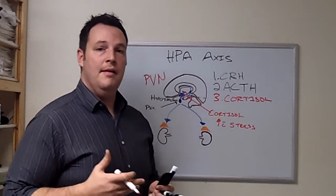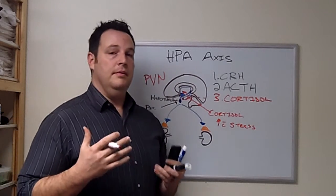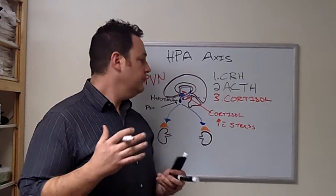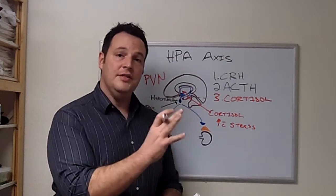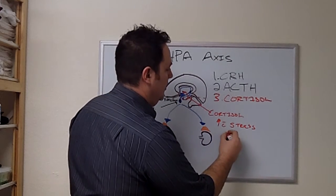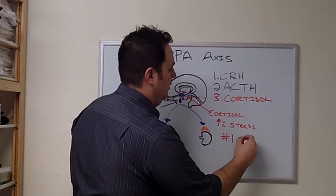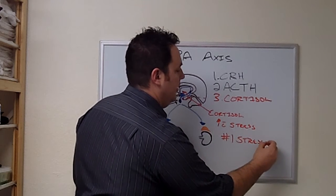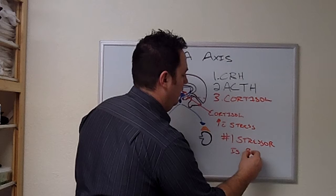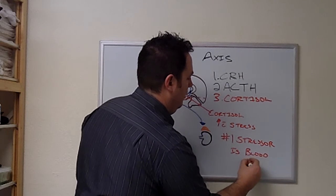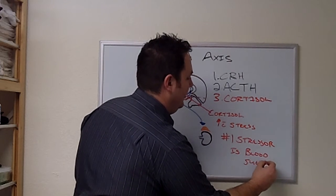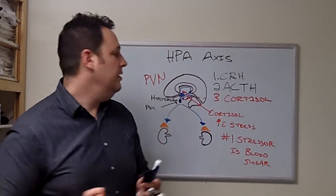Cortisol, again, our major stress hormone. Stress comes from emotional, physical, chemical, and the main stressor, number one stressor, is blood sugar dysregulation. So we've got to get that in check. One of our first things we have to do.